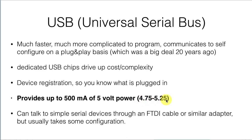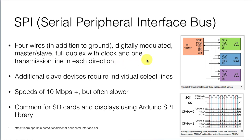That 5-volt power isn't guaranteed to be exactly 5 volts though — it can range over plus or minus a quarter of a volt. There are devices including FTDI cables or similar adapters that can talk to simple serial devices, so you can use your computer's USB to talk to the simple serial on an Arduino with a proper cable. We'll now move on to serial communication interfaces used typically on microcontrollers to talk to other instrumentation, usually smart instruments attached to them.